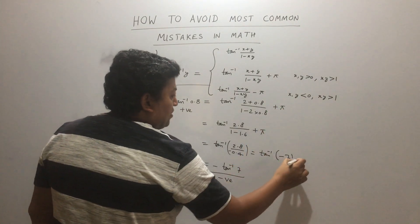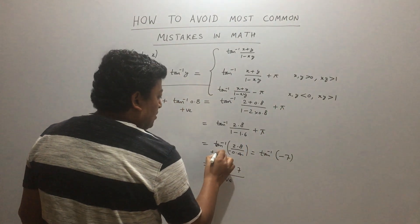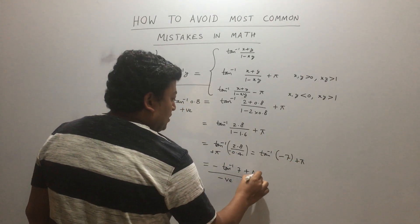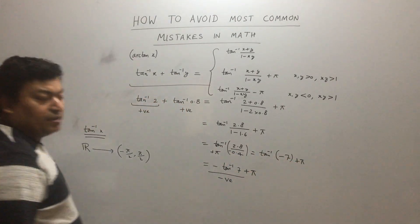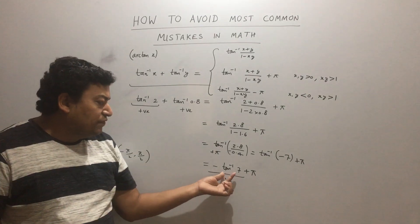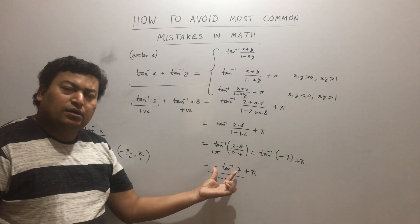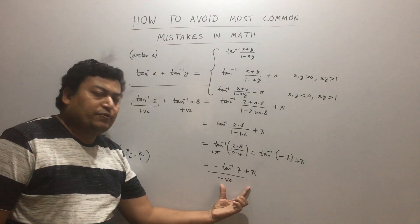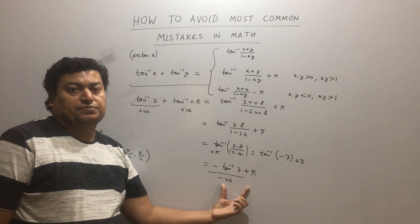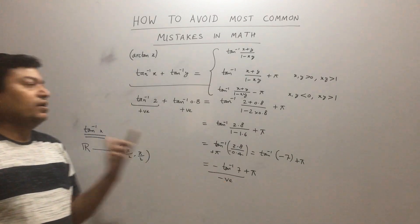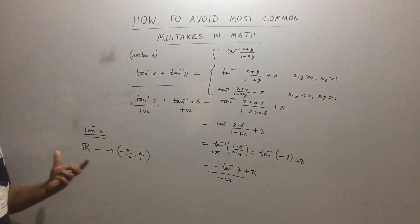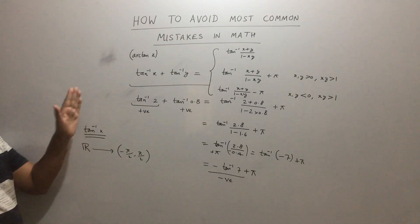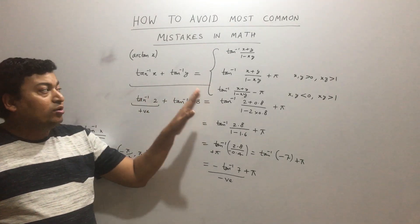In our problem, 2 and 0.8 are both positive and xy = 2 × 0.8 = 1.6 > 1, so the right answer requires adding π. So the answer is -tan⁻¹(7) + π, which is somewhere between 0 and π/2, giving us a positive number. This is the correct answer.